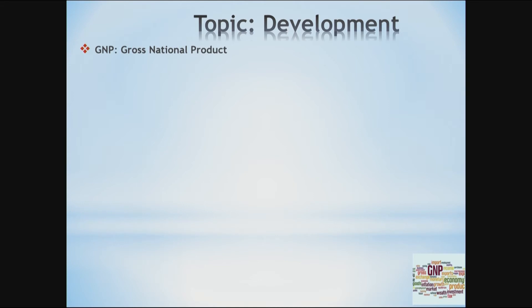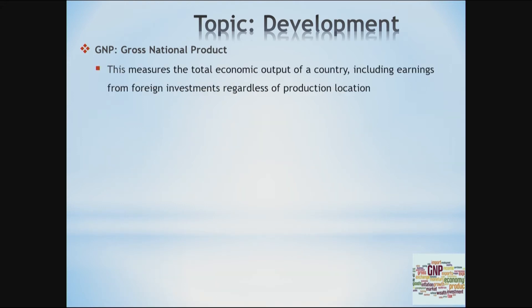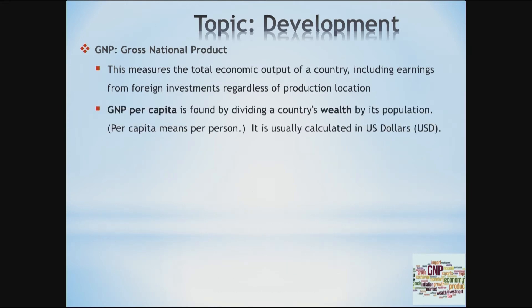As we discussed last lesson and the lesson before, we discussed a lot about GNP. We know for sure that GNP measures the total economic output of a country, including earnings from foreign investments, regardless of production location. GNP per capita is found by dividing a country's wealth by its population, and per capita also means per person. It is usually calculated in US dollars.